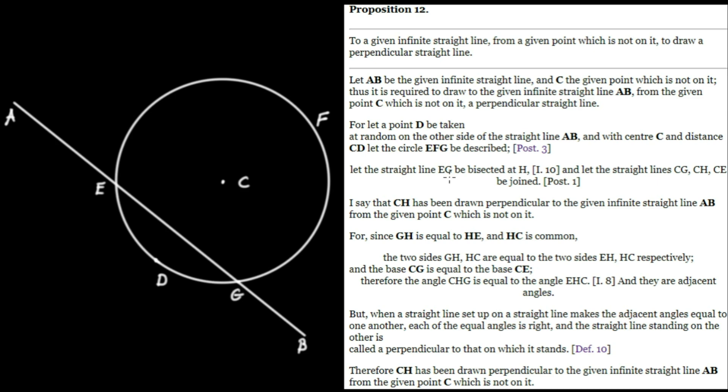Now, let the straight line EG be bisected at H. We can bisect a straight line by Proposition 10, so we're going to bisect this line EG at H. Let's say the bisection point is right there at H. Now let the straight lines CG, CH, and CE be joined. We have CG there to there, CH here to here, and CE. That completes the construction.